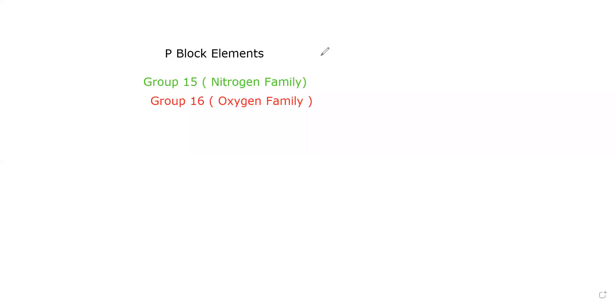Today we're going to discuss P-block elements, specifically Group 15 and Group 16 elements. For Group 15, the nitrogen family, first write down what is there: nitrogen, phosphorus, arsenic, antimony, and bismuth.